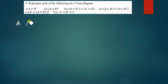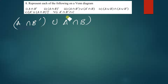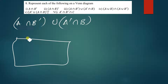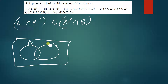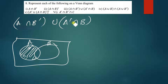Let's move on to the next part: (A intersection B complement) union (A complement intersection B). We first shade A intersection B complement and then shade A complement intersection B. A intersection B complement was just this part, and A complement intersection B is simply this part here.